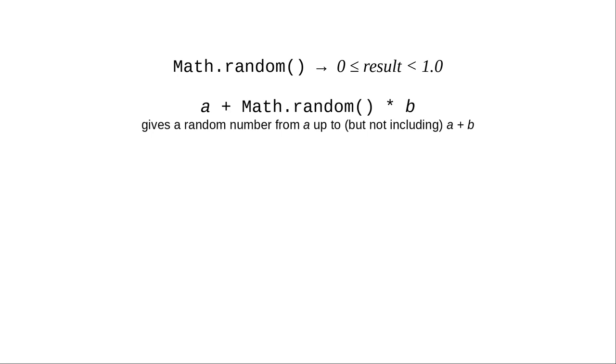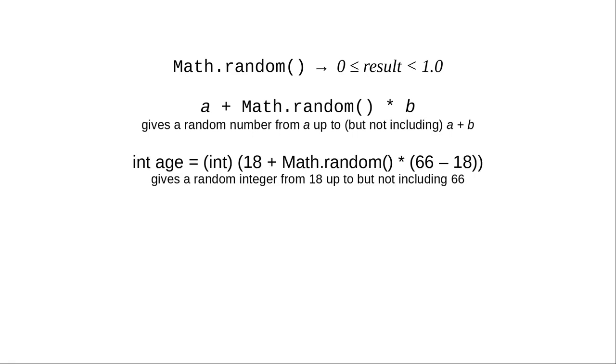Here's the generic formula for creating a random number in a given range. And here's how you might use it in a program to generate a random age between 18 up to but not including 66, which would be 18 through 65.